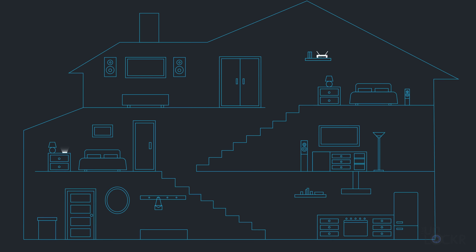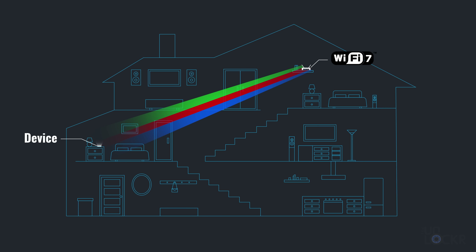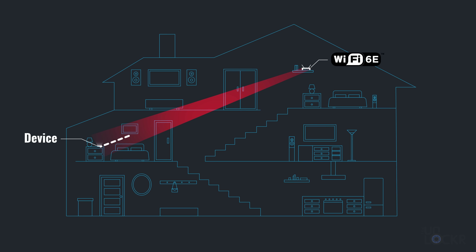But there's a new feature called MLO, or Multi-Link Operation. New to Wi-Fi 7, this allows the router and devices to combine all of the frequencies — 2.4 GHz, 5 GHz, and 6 GHz — together into a single connection. Before Wi-Fi 7, devices used to have to connect to one of these bands at a time on a fixed channel within that band.